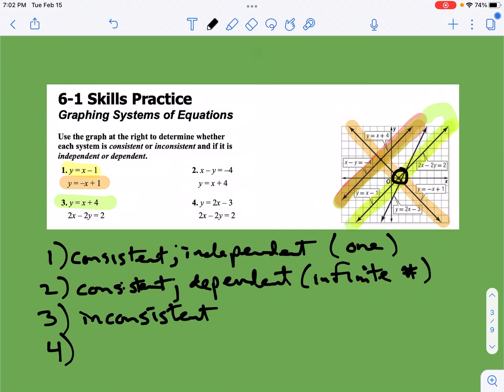And then number four, y equals 2x minus 3 is this line right here. And then it crosses with our 2x minus 2y equals 2, which is this green one right here. And so that one crosses right here. We can see that that has one solution, so it's consistent and independent. Remember, independent—somebody says, I'm independent, I'm an independent person. It means they're kind of alone. So that's one solution.